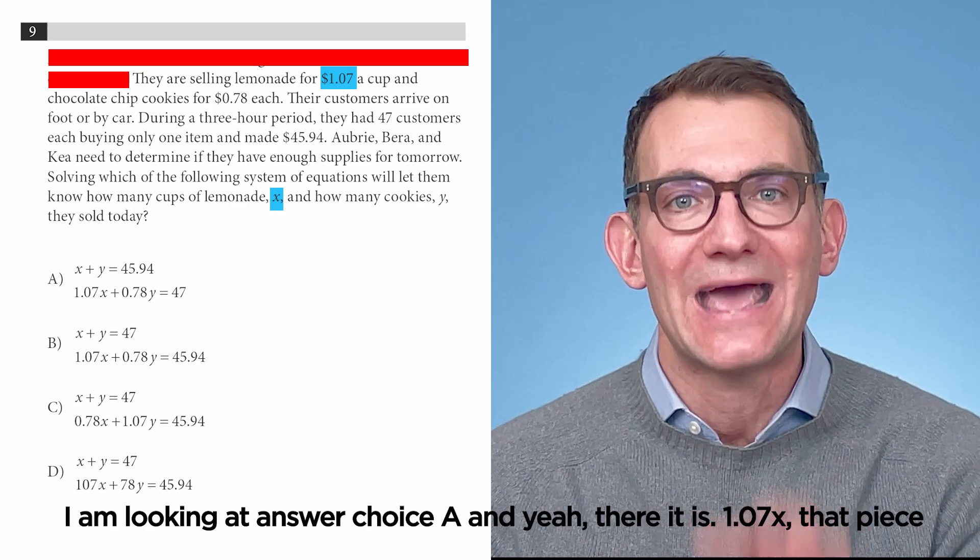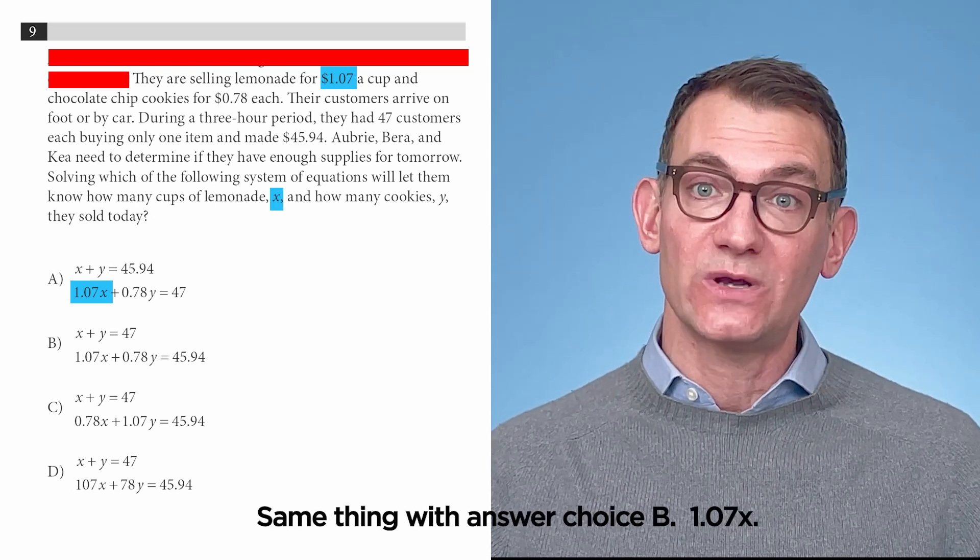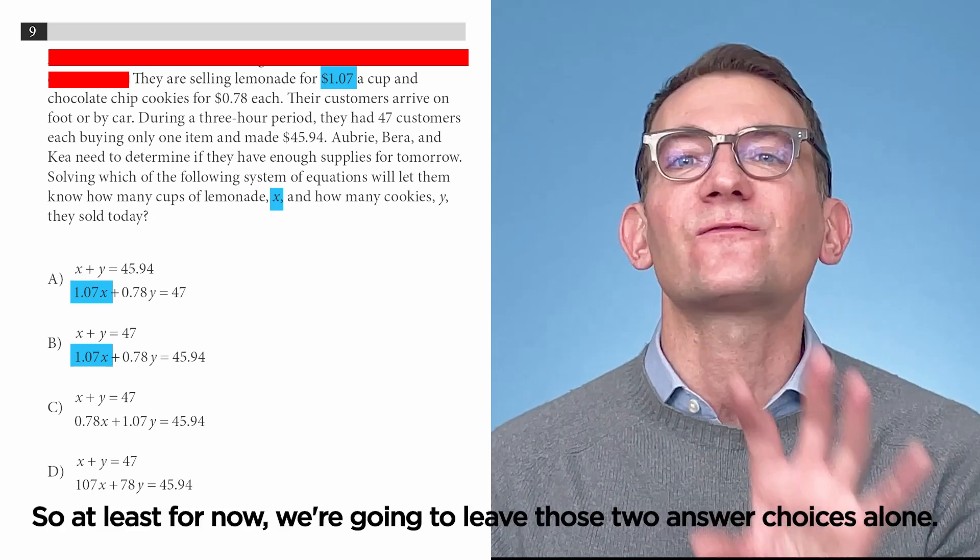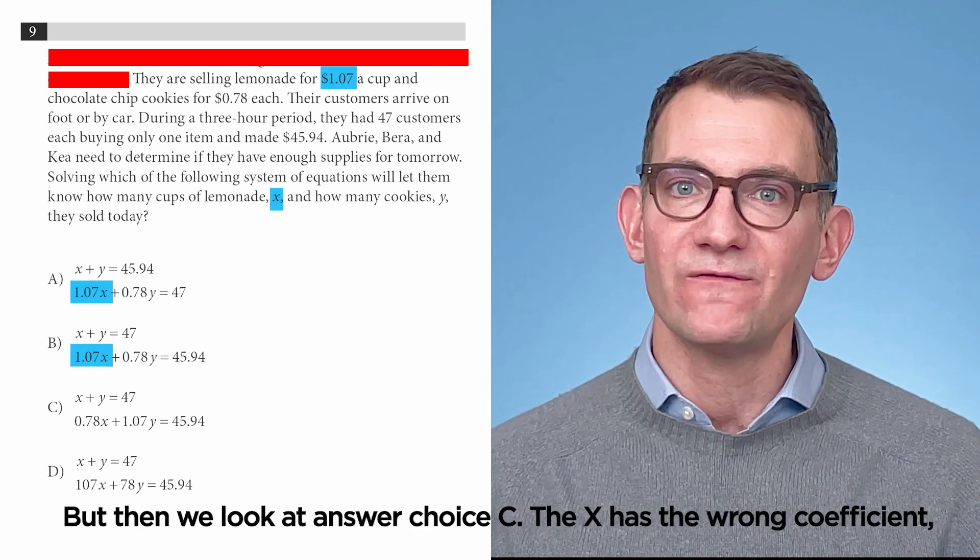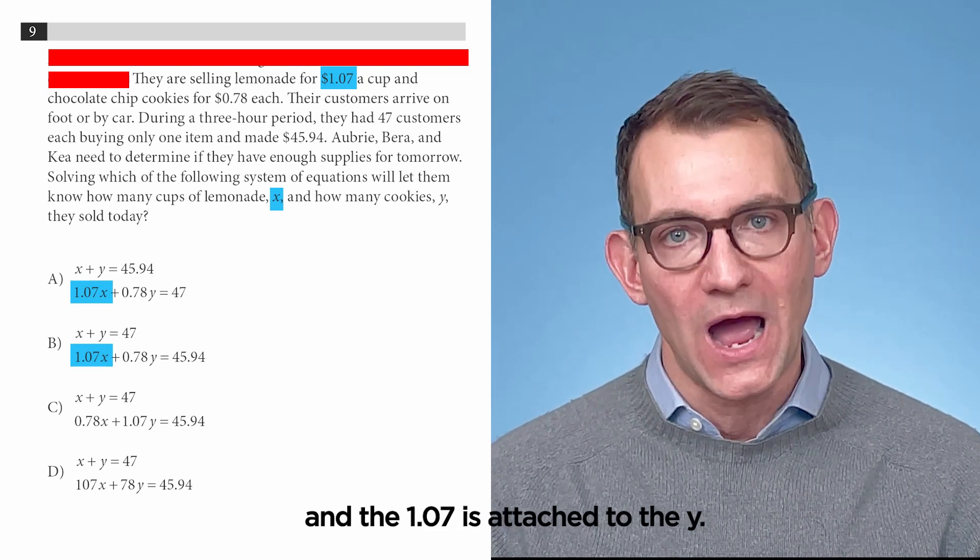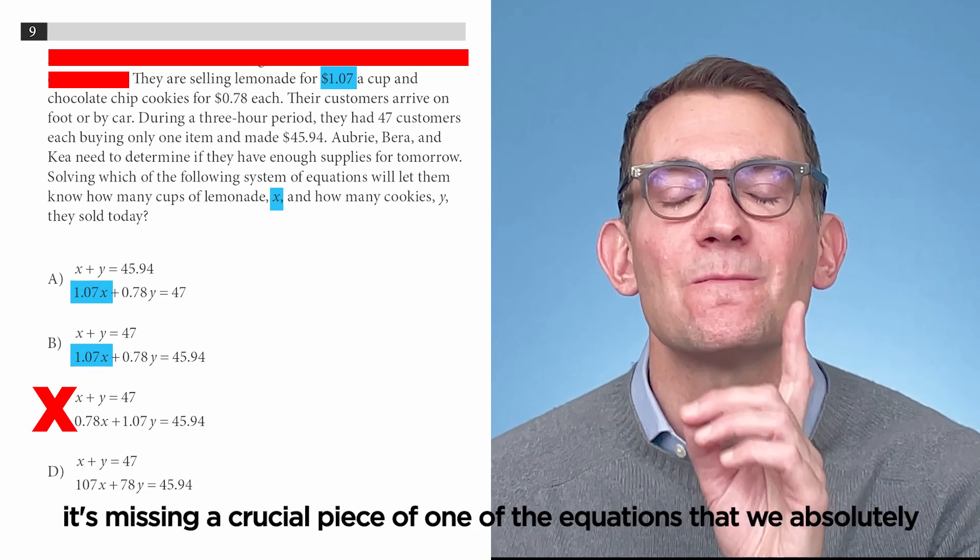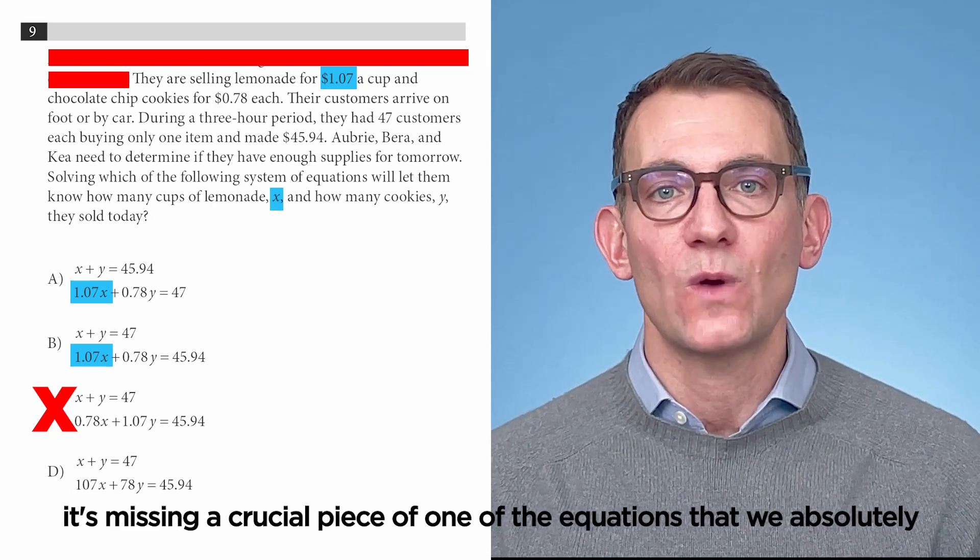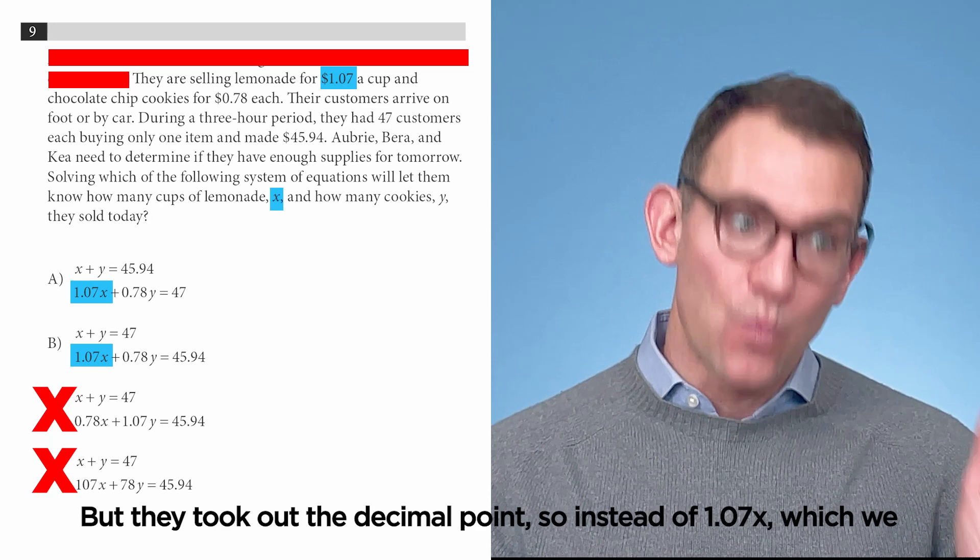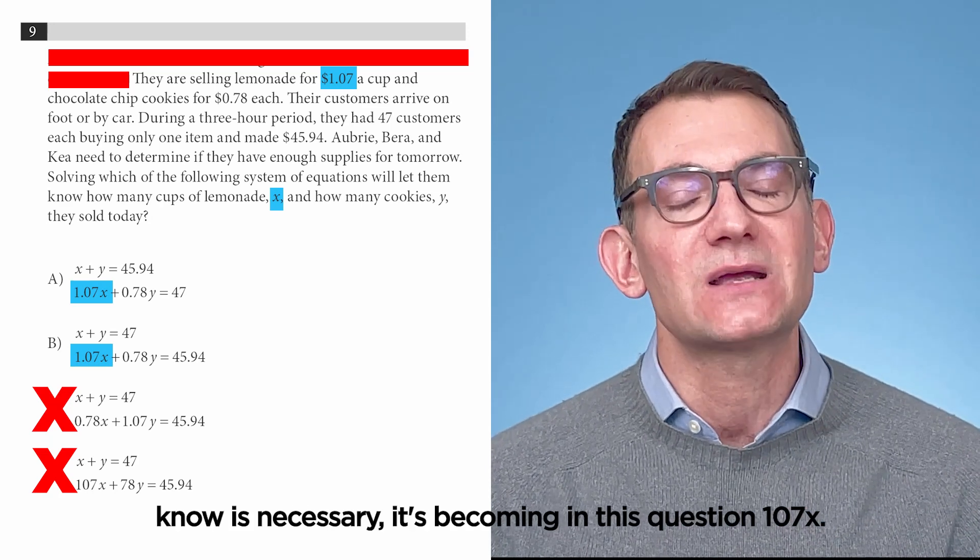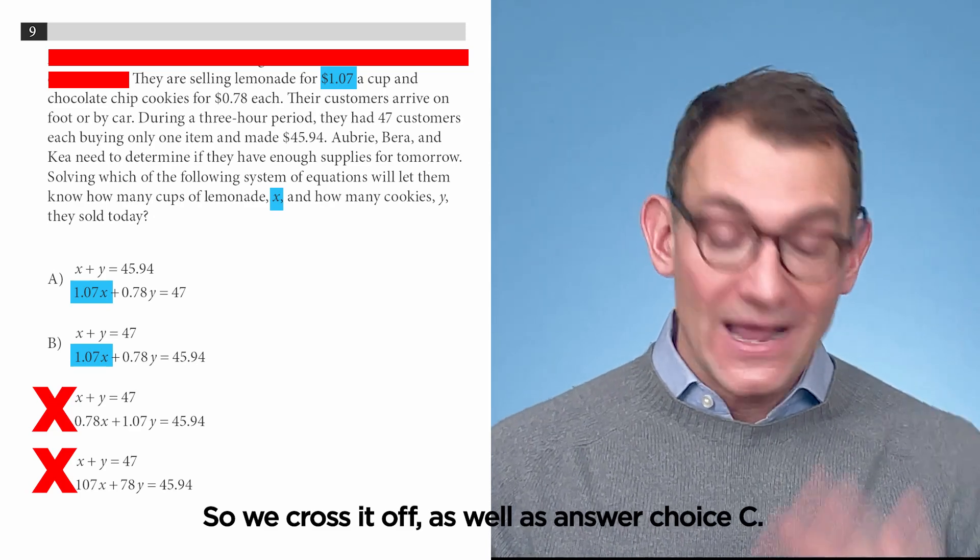Right now, I am looking at answer choice A, and yeah, there it is, 1.07x. That piece of the equation is 100% correct. Same thing with answer choice B, 1.07x. So, at least for now, we're going to leave those two answer choices alone, but then we look at answer choice C. The x has the wrong coefficient, and the 1.07 is attached to the y. So, that doesn't work. So, C could never, ever be correct. So, we're going to cross it out. And friends, we're doing this because it's missing a crucial piece of one of the equations that we absolutely must have. And D is the same way because it looks pretty close, but they took out the decimal point. So, instead of 1.07x, which we know is necessary, it's becoming in this question 107x. And that is most definitely incorrect. So, we cross it off as well as answer choice C.